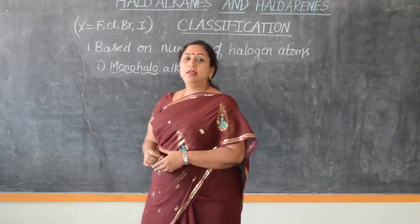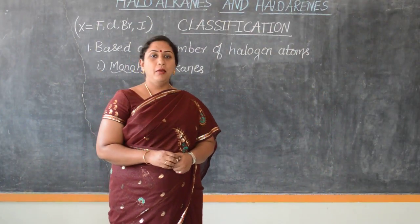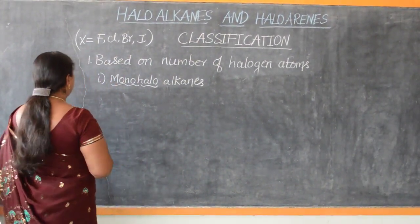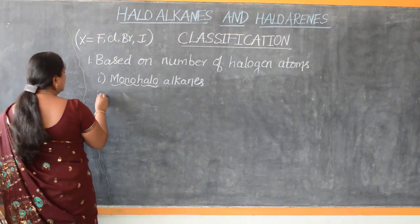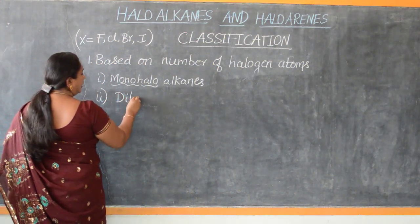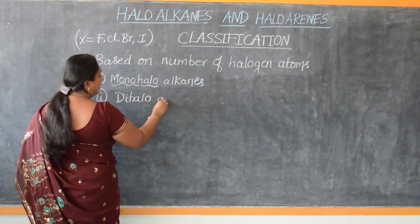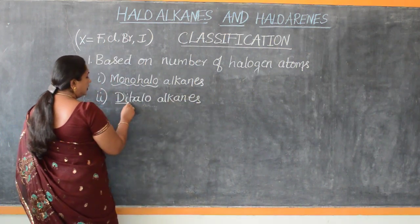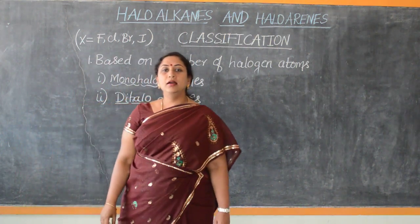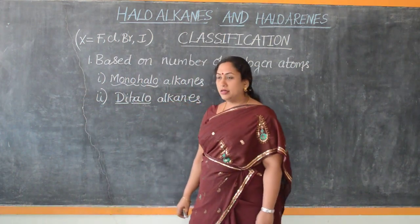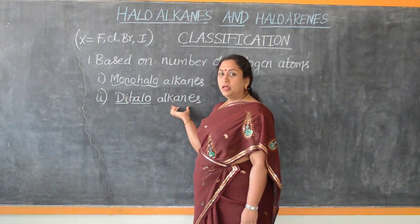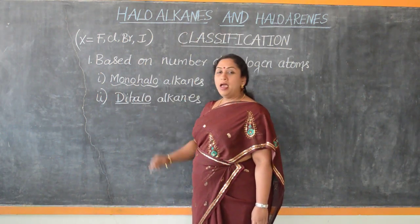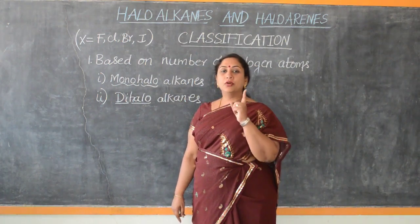In the previous video lesson, we learnt in detail about mono-haloalkanes. In this video lesson, let us learn in detail about di-haloalkanes. What are di-haloalkanes? The name gives us a clear idea that these are saturated hydrocarbons — alkanes — that contain two halogen atoms in one molecule.